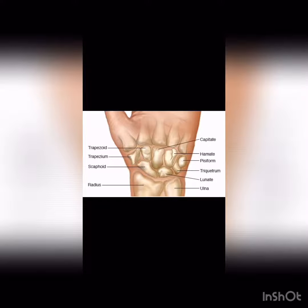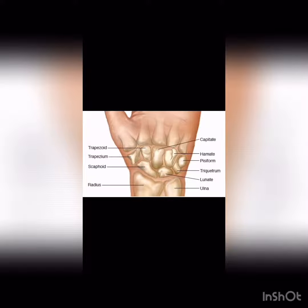The very first carpal bone in the lower row is the scaphoid. Scaphoid means it looks like a boat shape — named in Greek and Latin based on its shape. Next is the lunate, which looks like a half-moon shape. Then the triquetrum, which looks like a triangle. And finally the pisiform, which looks like a small pea-sized bone. This completes the lower row.